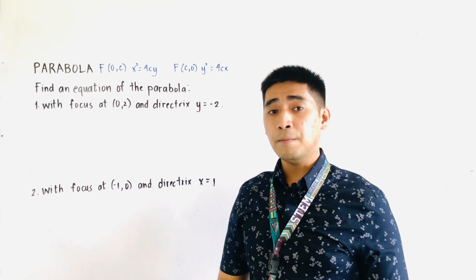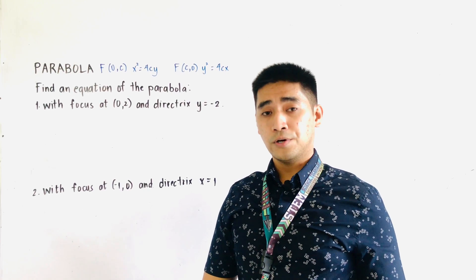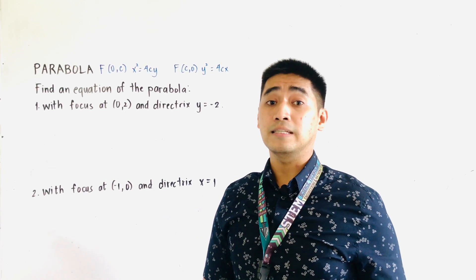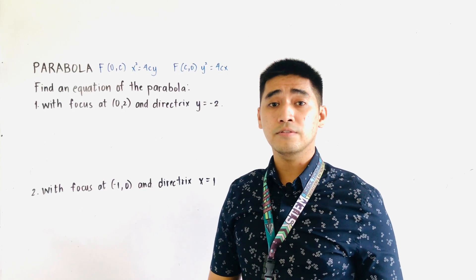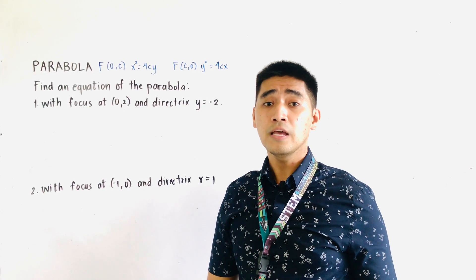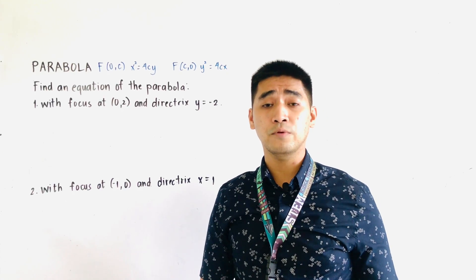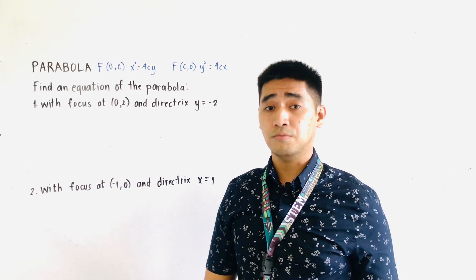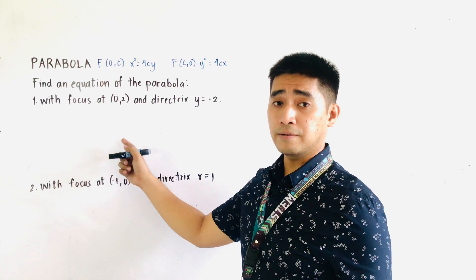Always remember that the coordinate equal to 0 is the one being squared. If the x coordinate is equal to 0, therefore our equation is x squared. If the y coordinate is equal to 0, therefore our equation should contain y squared. So let us now first graph this one.